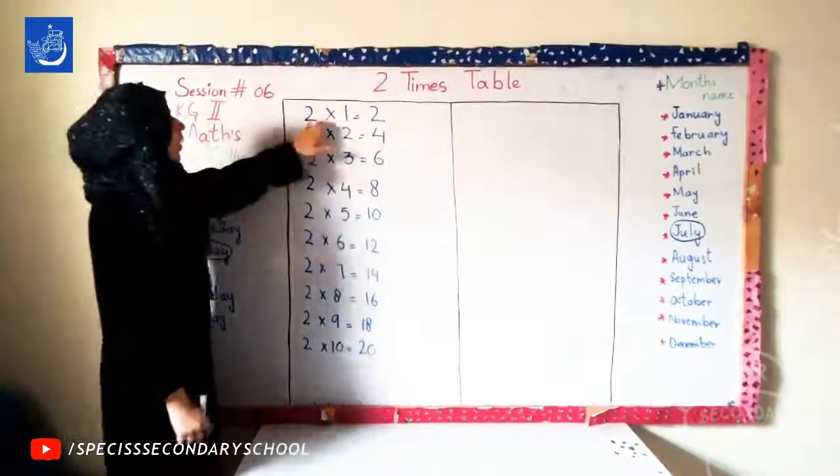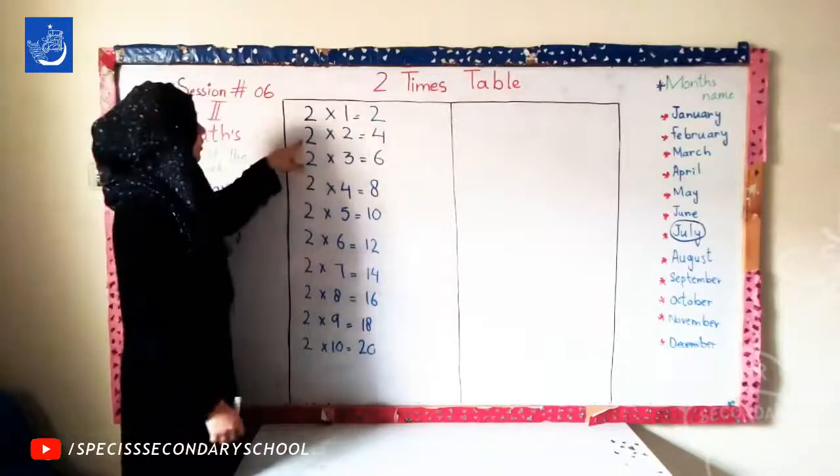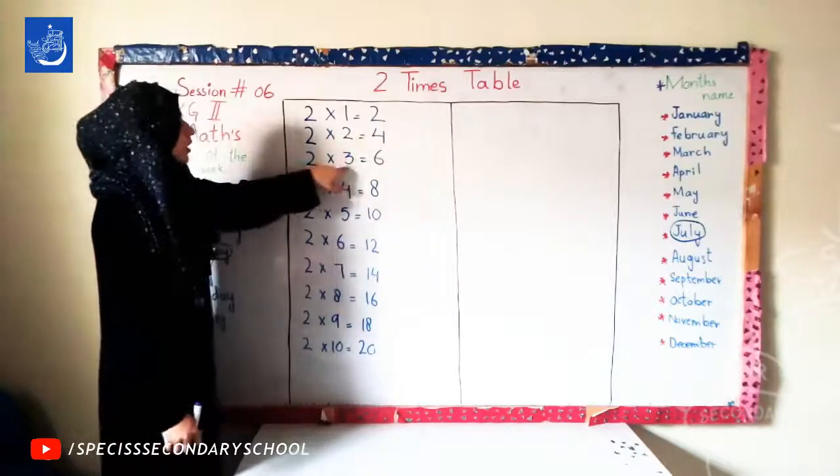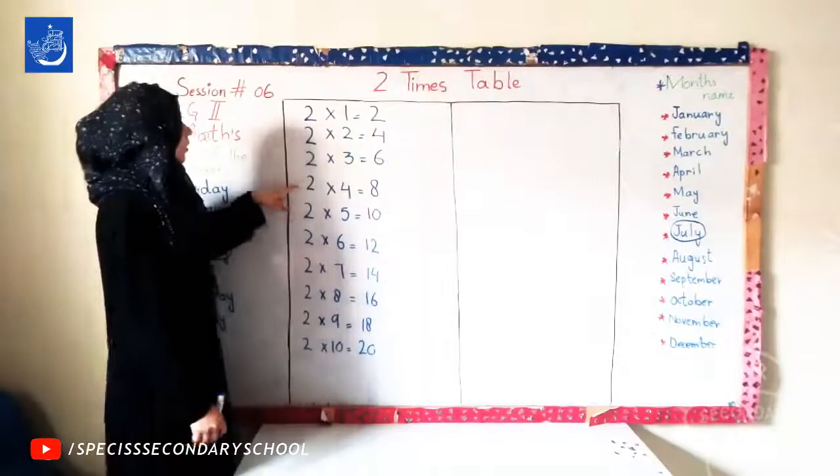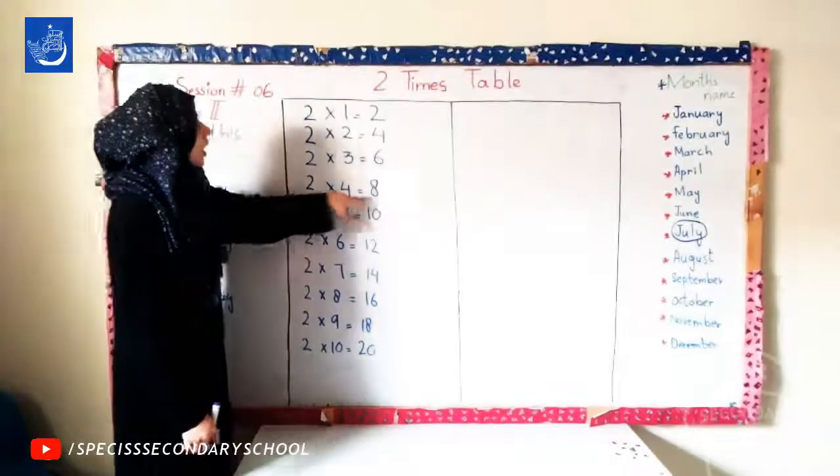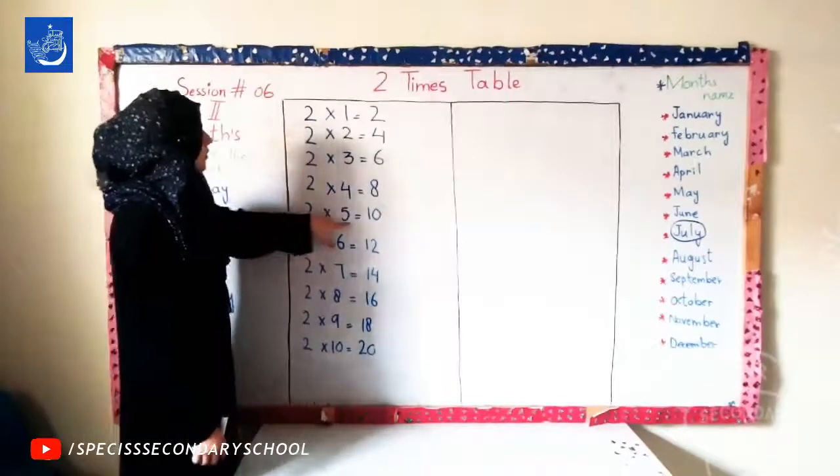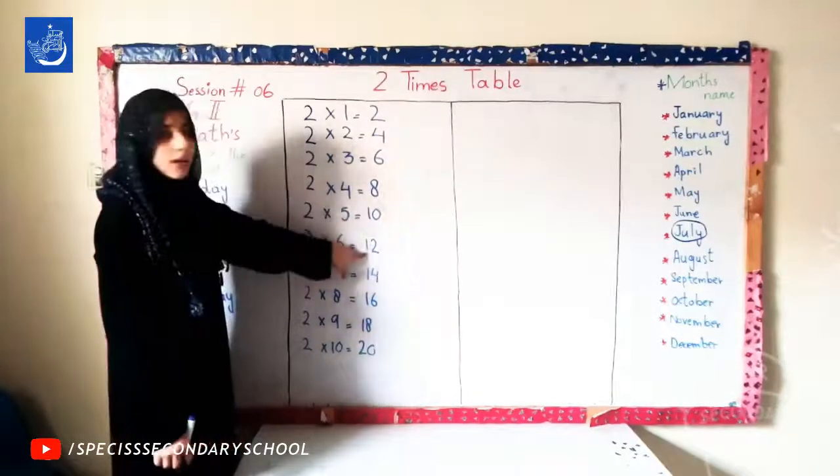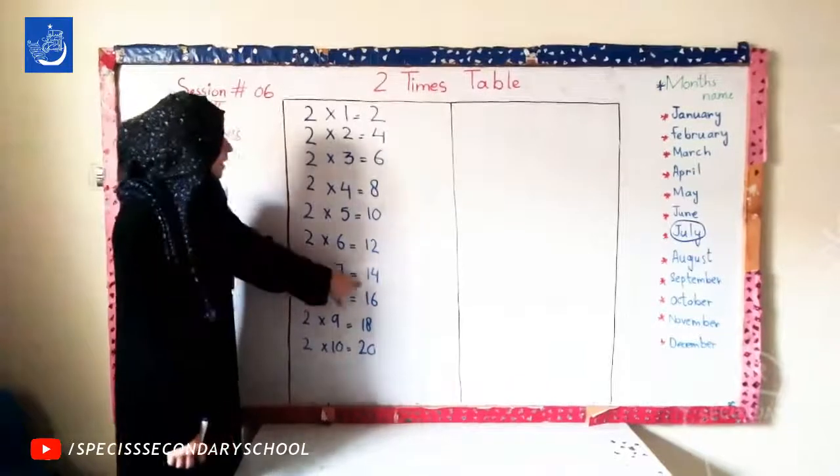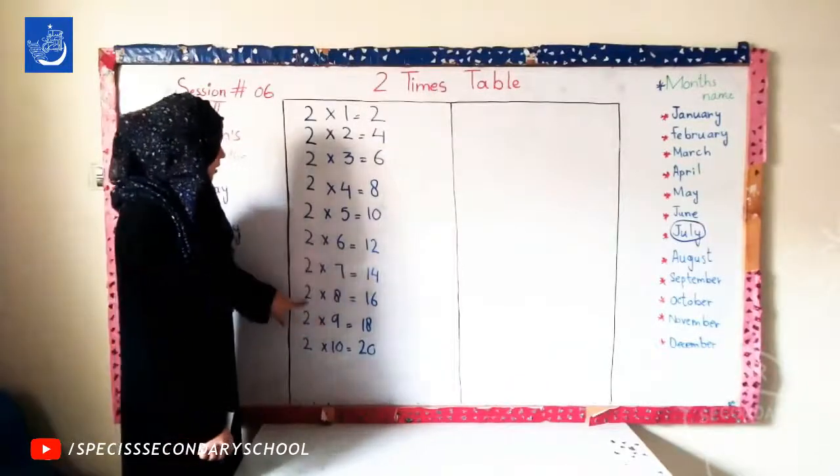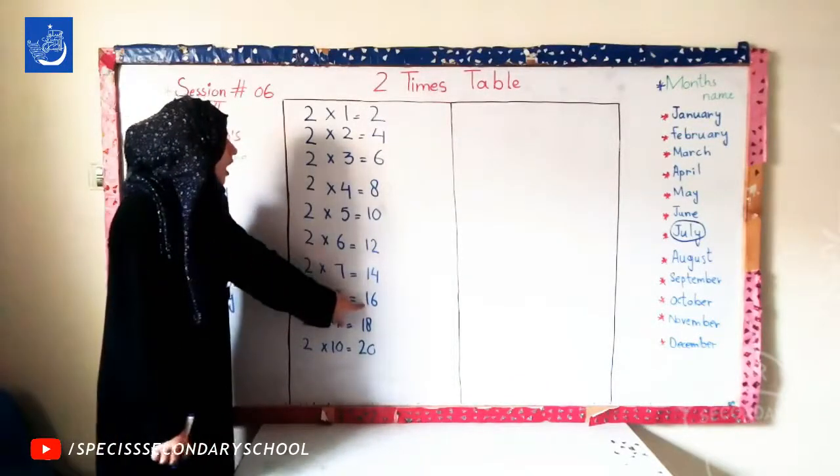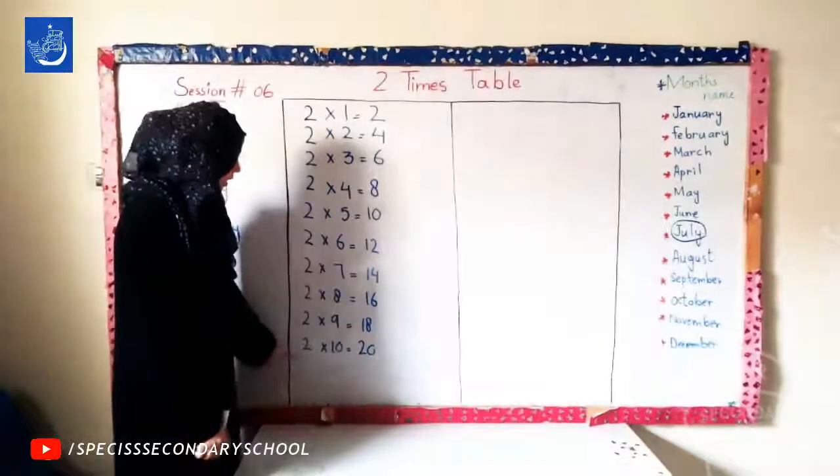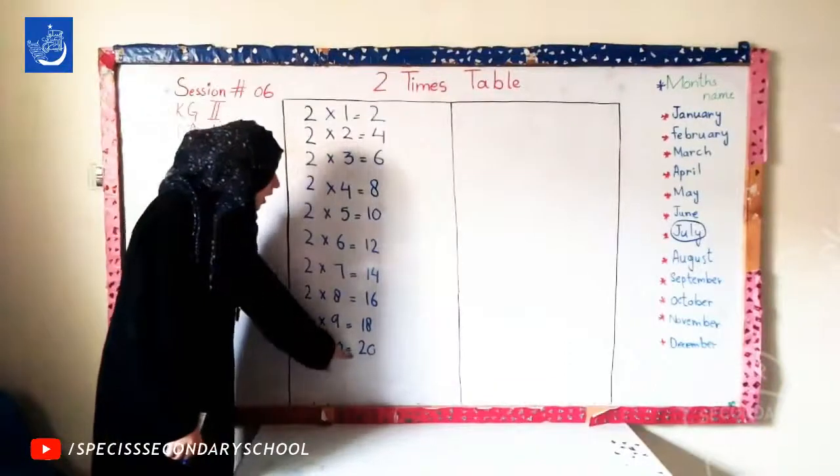Now, repeat once again. 2-1s are 2. 2-2s are 4. 2-3s are 6. 2-4s are 8. 2-5s are 10. 2-6s are 12. 2-7s are 14. 2-8s are 16. 2-9s are 18. 2-10s are 20.